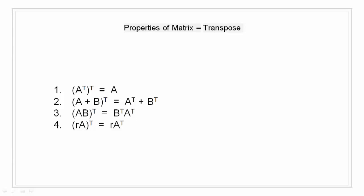Properties of transpose of matrix. Let R be a real number, and A and B be matrices. Then A transpose transpose is A, that is obvious. A plus B transpose is equal to A transpose plus B transpose. Then we have AB transpose is equal to B transpose A transpose. And RA transpose is equal to RA transpose.